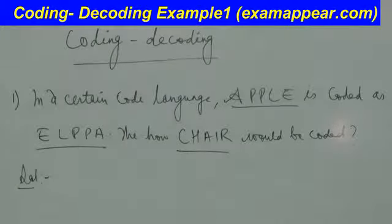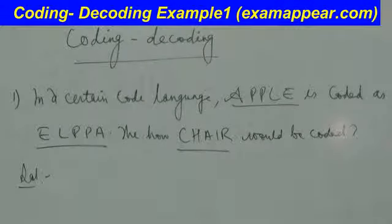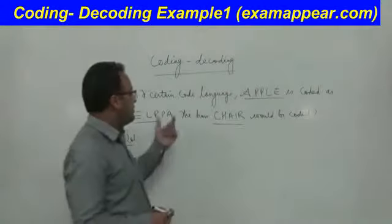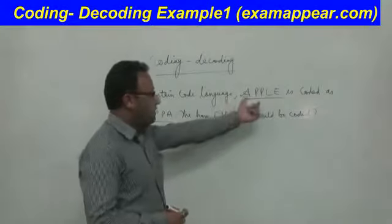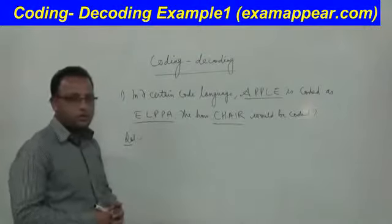Let's look at the question. The question is, in a certain code language, APPLE is coded as ELPPE. Then how would CHAIR be coded?